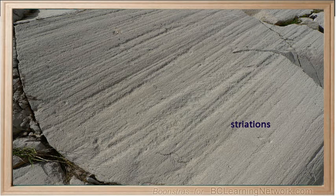Glacial striations are scratches or gouges cut into bedrock by glacial abrasion. Glacial striations are usually multiple, straight, and parallel, representing the movement of the glacier using rock fragments and sand grains embedded in the base of the glacier as cutting tools.